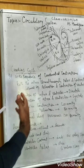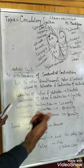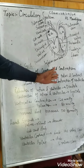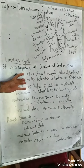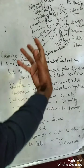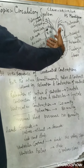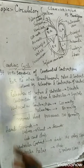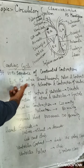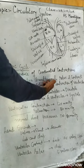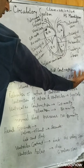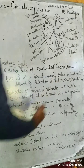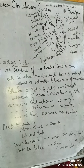The cardiac cycle is the sequence of coordinated contractions in the heart — how the contractions of the auricles and ventricles take place. In one cardiac cycle, both atria simultaneously relax and contract, followed by the relaxation and contraction of the ventricles. That constitutes one cardiac cycle.